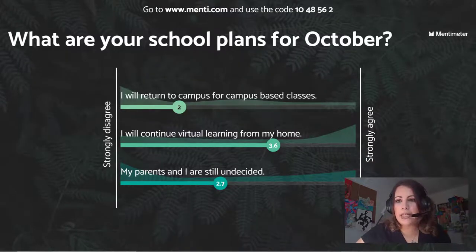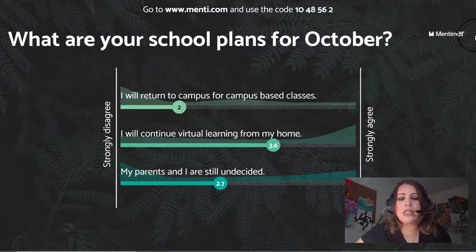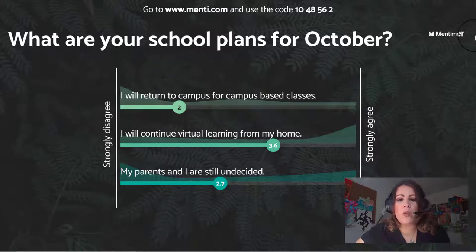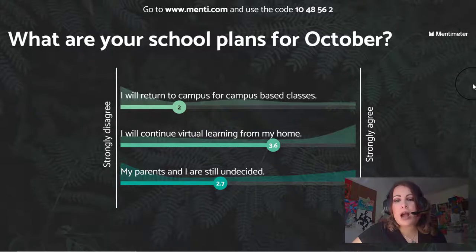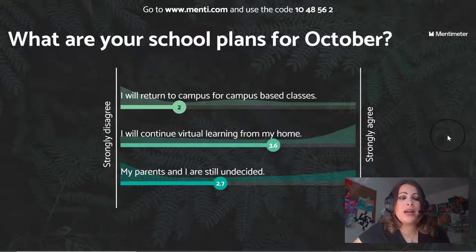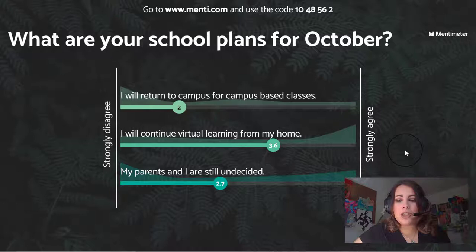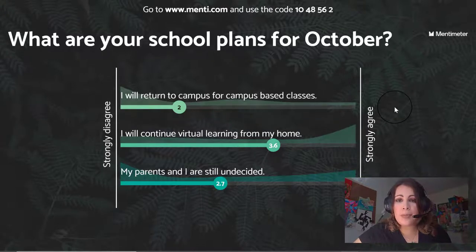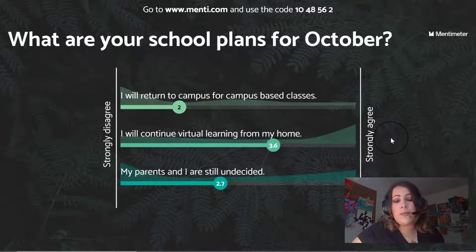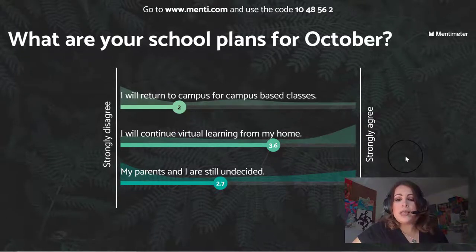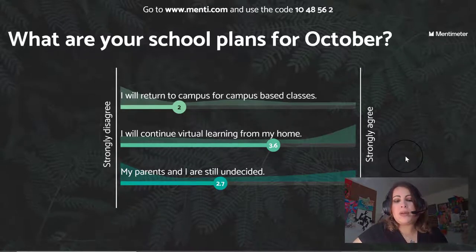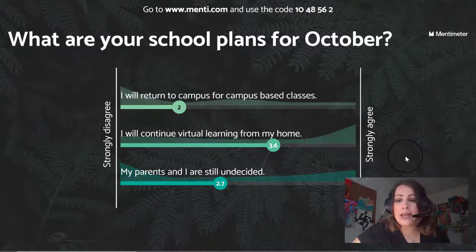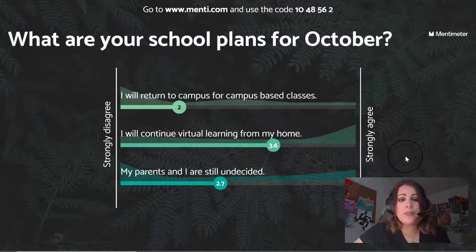In this last example, I used Mentimeter to get a sense of how many students were continuing online or coming back on campus in October when our district decided to reopen. I created a chart slide — all they have to do is use the code and input their responses, and Mentimeter immediately gives me data I can use to figure out how many students to expect in my classroom, who's continuing from home, and who still needs to decide. This helps me plan ahead and make the best decisions for how to teach my classes.